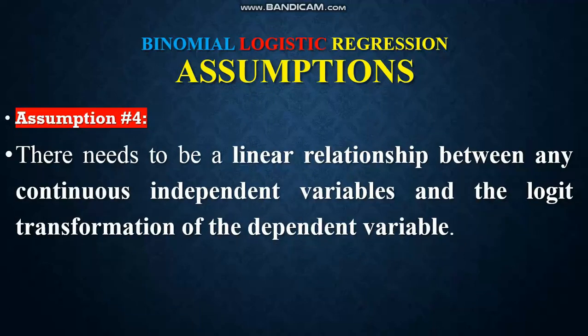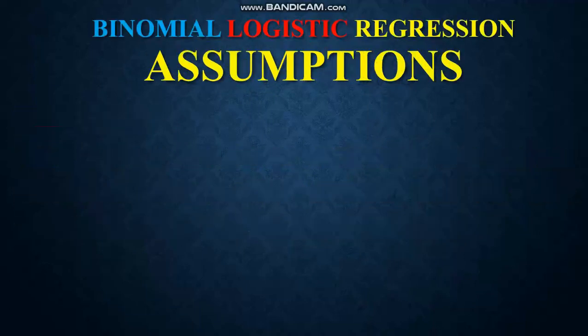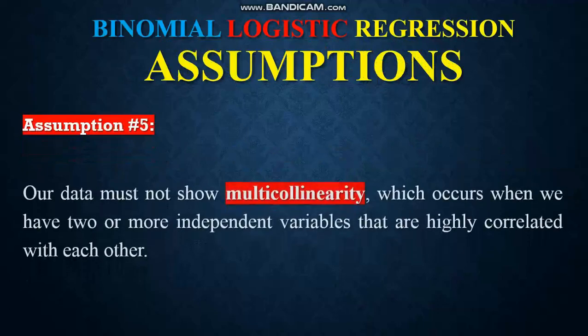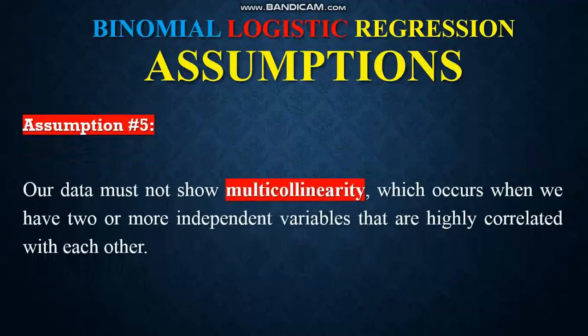The fifth assumption is that our data must not show multicollinearity, which occurs when we have two or more independent variables that are highly correlated with each other.